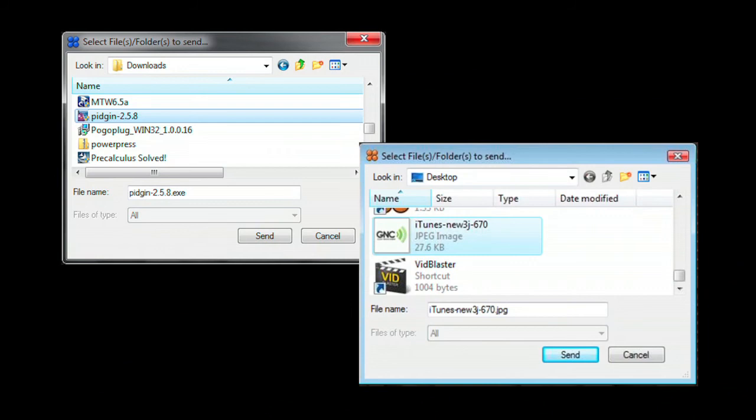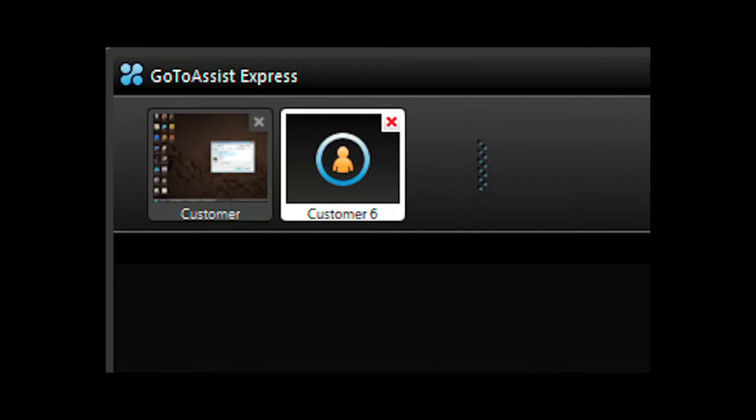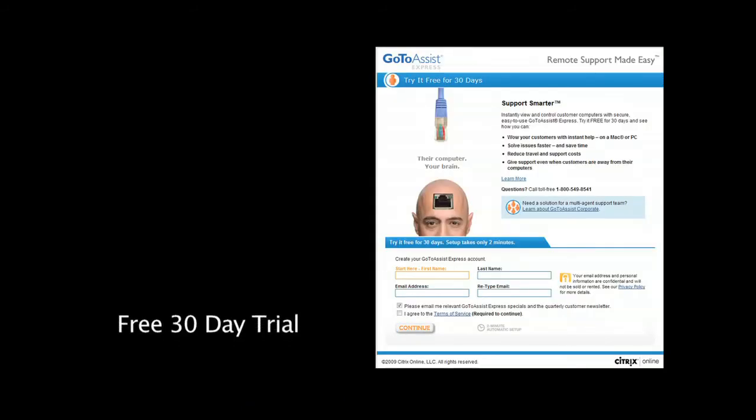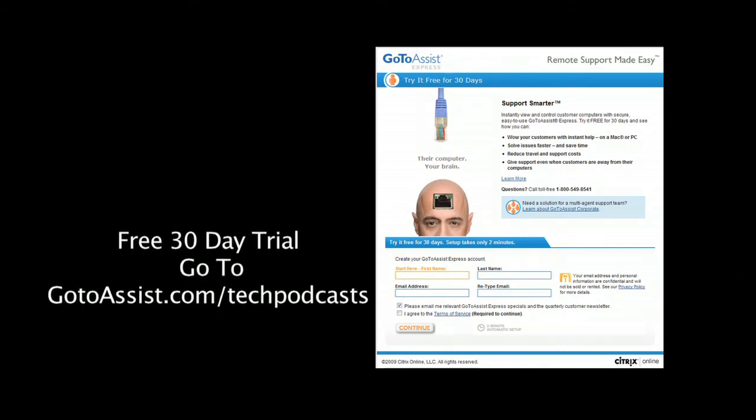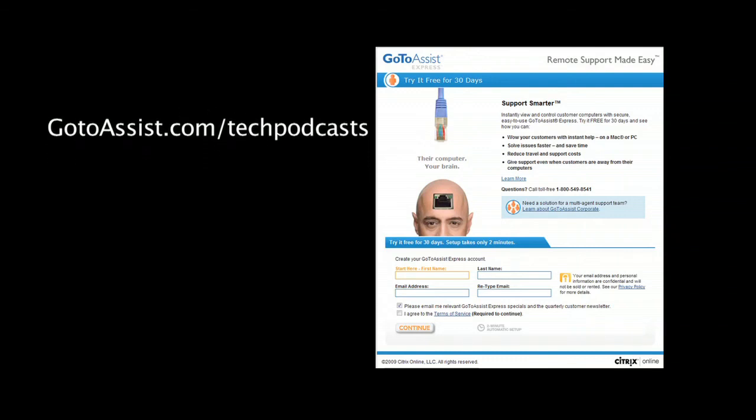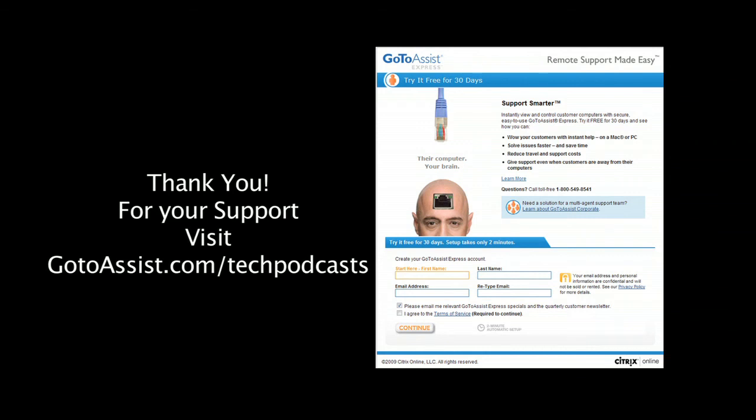Easily send or receive files back and forth between your and your client's computer. Have another support request come in and need to do two support sessions at the same time? You can run multiple support sessions with GoToAssist Express. Included is an interactive chat client. As you can see, the menu bar of GoToAssist Express gives you everything you need to do online support. To try GoToAssist Express right now, free for 30 days, you must visit GoToAssist.com slash techpodcast. That's GoToAssist.com slash techpodcast for a free trial.